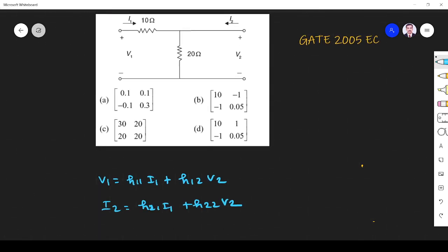We can use our standard methods. h11 is equal to v1 by i1 provided v2 equals zero. If v2 is zero, this term will be zero, so h11 equals v1 by i1. Like that we have to find everything.